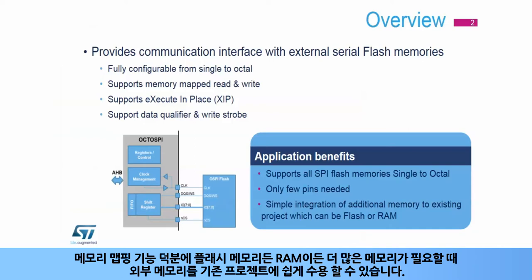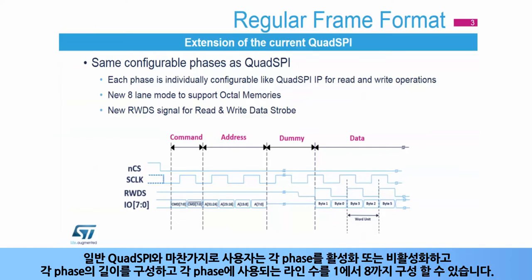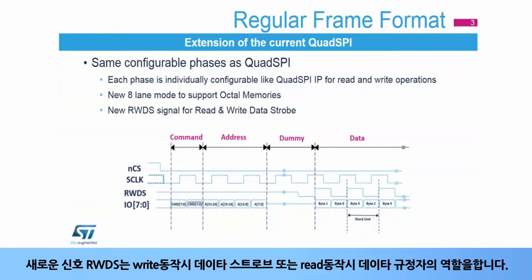The OctoSPI interface offers high flexibility for frame format configuration to address any serial flash, from a single data lane up to eight data lines. As with regular quad SPI, the user can enable or disable each of the phases, configure the length of each phase, and configure the number of lines used for each phase from one to eight. A new signal, RWDS, acts as either a write strobe during write operations or a read qualifier during read operations.